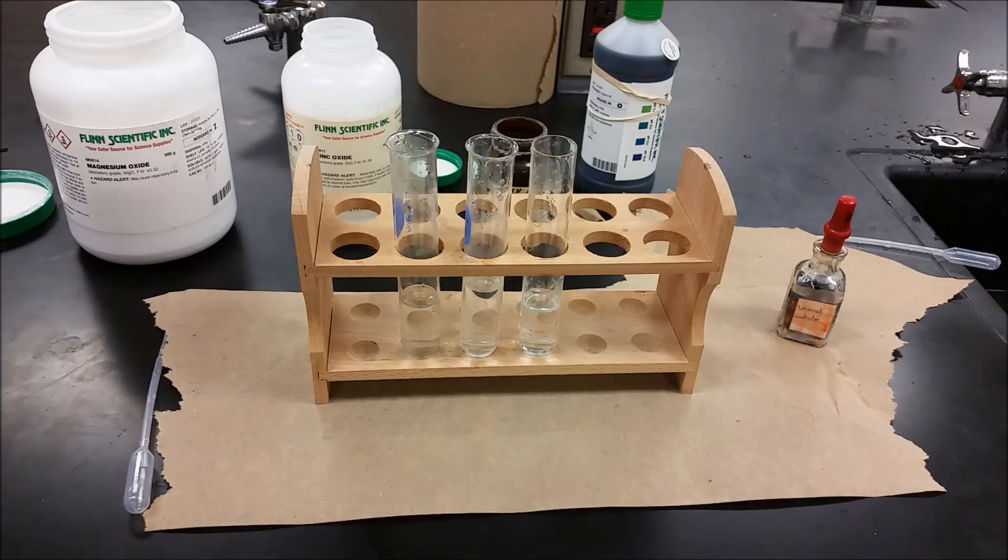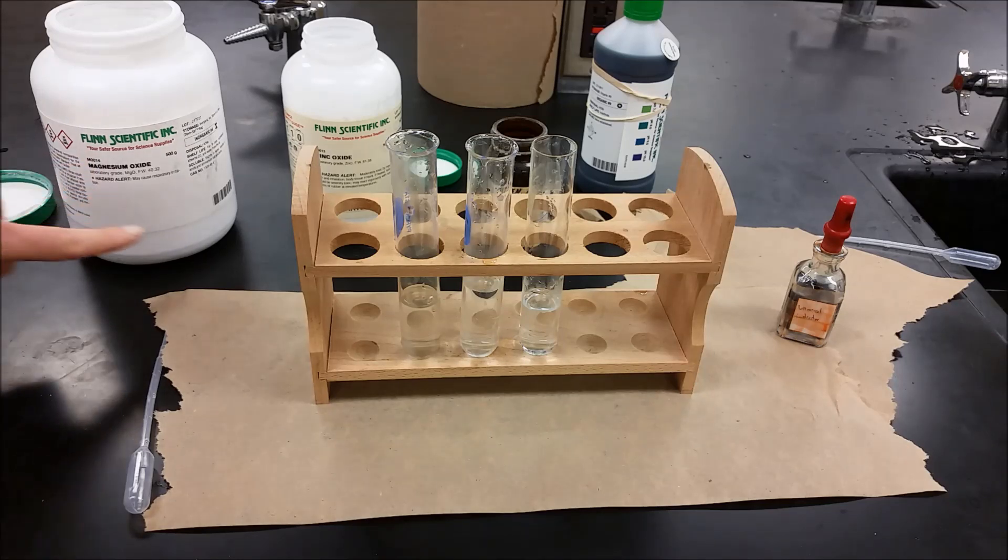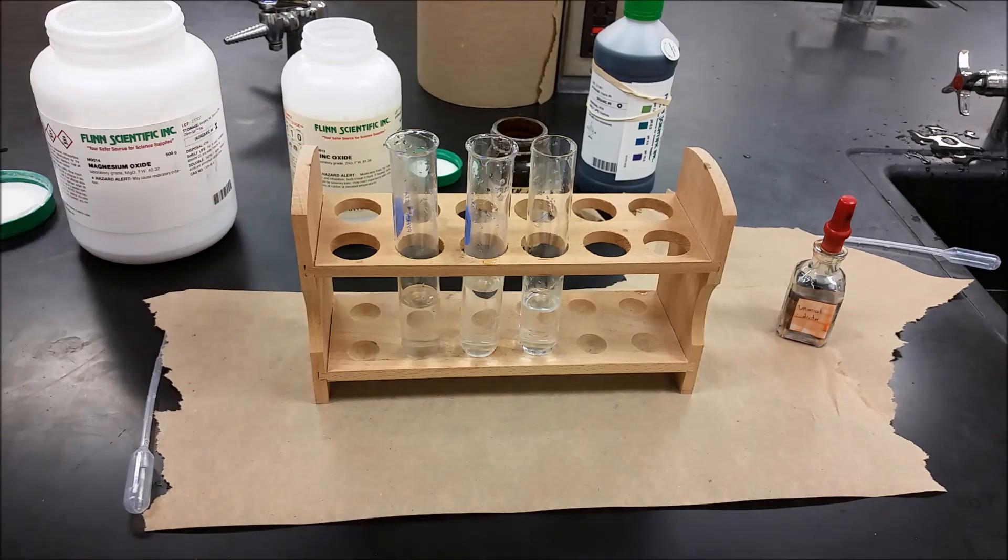All right, first reaction from IB unit 3, we're going to look at oxides plus water. We have magnesium oxide, zinc oxide, and phosphorus pentoxide.